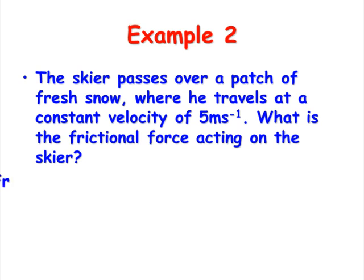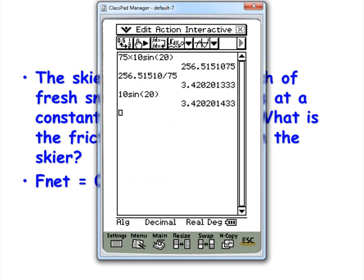In this case, we know that the net force is zero, so we've got M G sin theta must be equal and opposite to the friction. So since we calculated the force down the slope is 256.5 newtons, the friction must be equal and opposite, so to be 256.5 newtons up the slope.